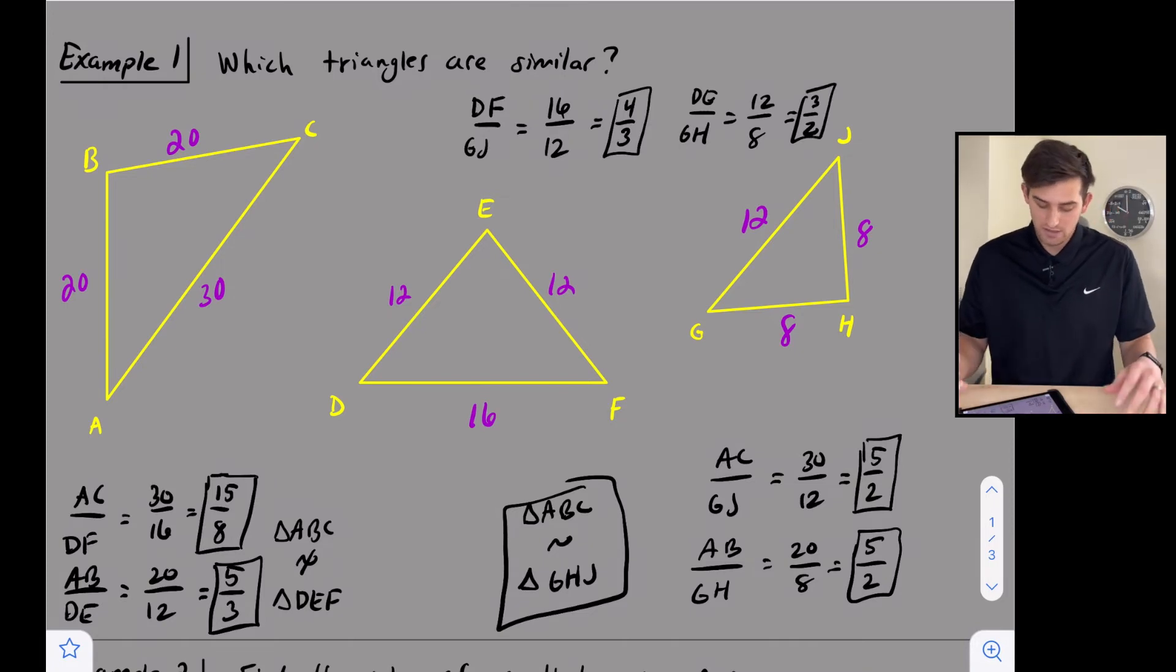So those are not the same. So we're going to say triangle DEF is not similar to triangle GHJ. So the only two triangles that were similar were ABC and GHJ.